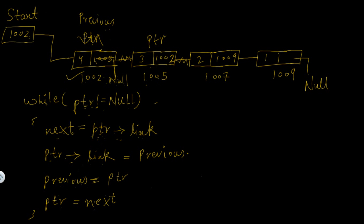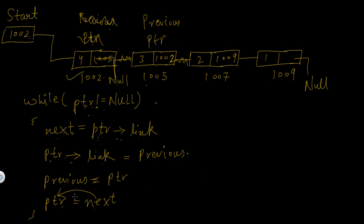Now previous will be assigned the value of PTR — PTR is storing the address of this node — so previous now means this second node. PTR will be assigned the value of next, and next is storing the address of the third node, so PTR now means this third node.